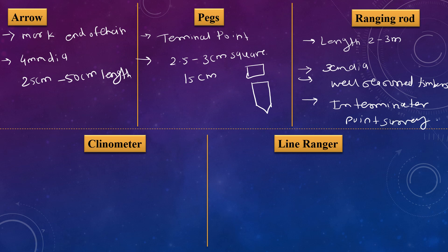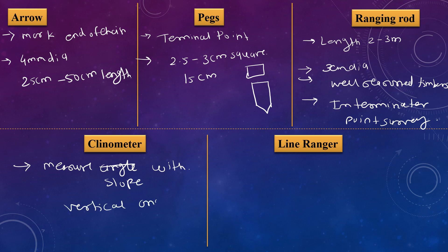The next instrument is the clinometer, which is used to measure slope with the help of a vertical angle. Next is the line ranger, which is used for direct ranging.